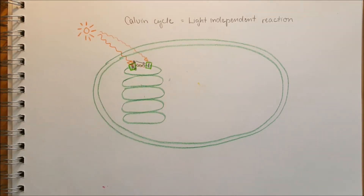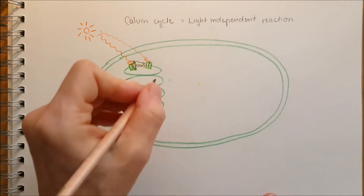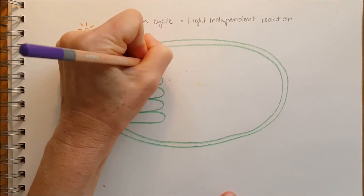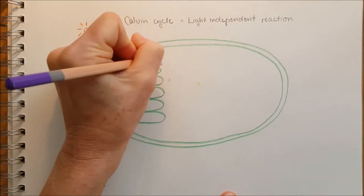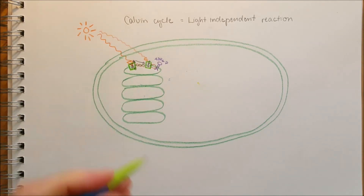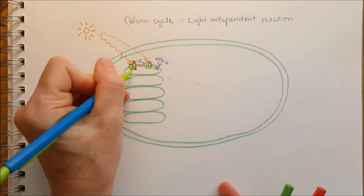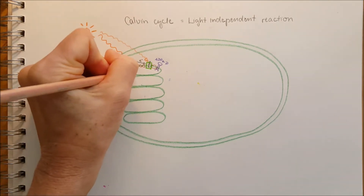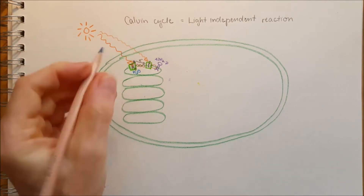Another photon arrives at photosystem I. The light-harvesting complexes absorb the energy, and the reaction center donates one electron as it receives another from the electron transport chain. It's a chain reaction, and at the end of the cycle, ATP synthase carries out photophosphorylation.